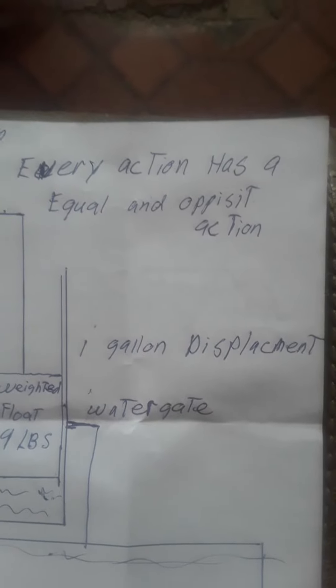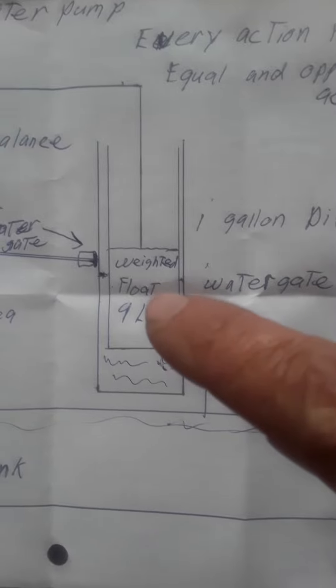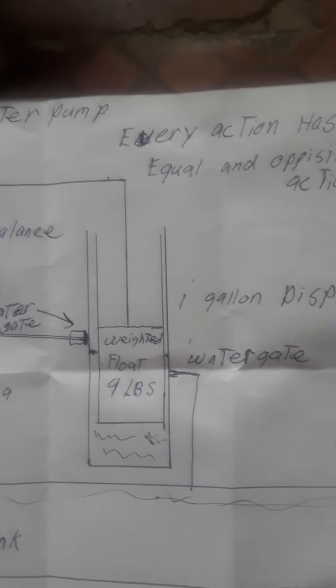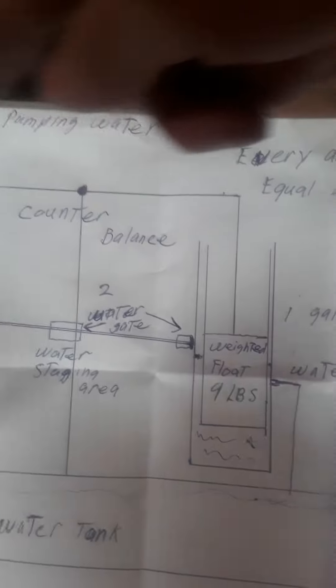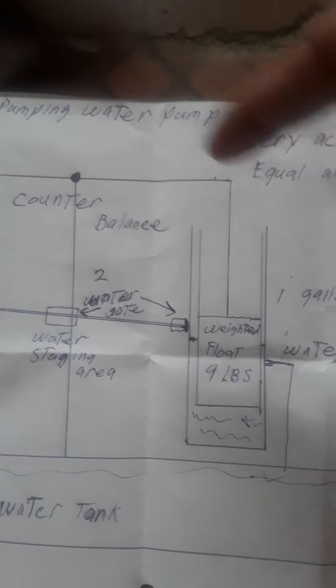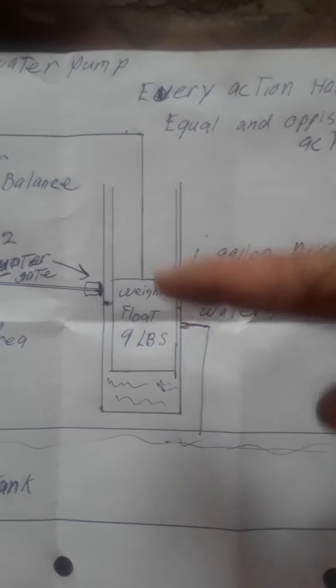Every action has an equal and opposite action — a self-pumping water pump. You have a nine pound weighted float. One gallon of water weighs eight pounds. For every action there is an equal and opposite reaction. Here is an equal — or almost equal — counter-balanced system, and the opposite action is the flotation and water.